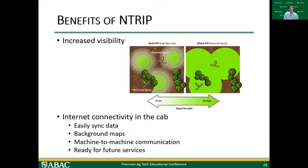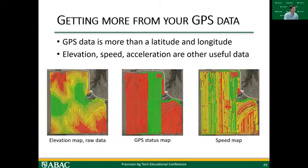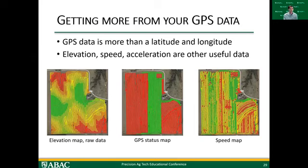Let's talk about how we can use our GPS data to benefit us on farm, beyond just AB lines and guidance. Our GPS data is more than just latitude and longitude — it's not just position in the field. When we go through a field, the monitor is recording a lot of different data, including elevation, speed, and acceleration among other things, as well as GPS status. Here I've included three maps of raw data coming off a combine: an elevation map, a GPS status map, and a speed map.